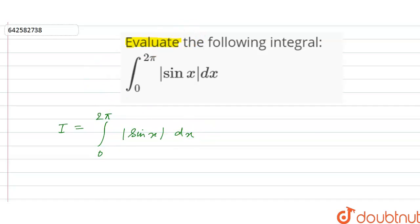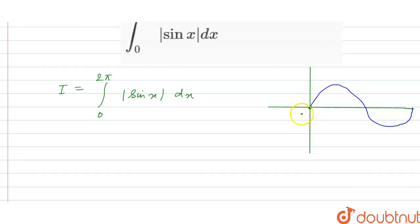So if we see the graph for sine x in the interval from 0 to π/2, the graph is like this. So this is 0, this is π/2, this is π, and this is 3π/2, and this is 2π.